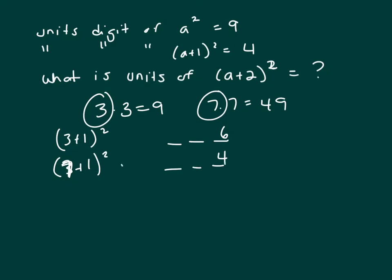So this is when a equals 7, and that's the one we want because it tells us that (a+1)² ends in 4. So we know a is 7. So (7+2)², 7 plus 2 is 9, 9² is 81. So the answer is 1.